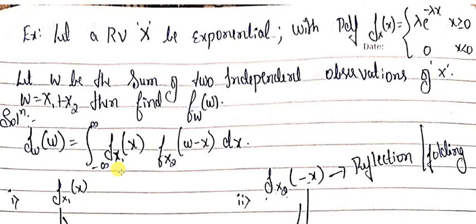Having got to know the information about the analysis of a random variable which is obtained by summing up two independent random variables, we shall have a look over some example or exercise problems on it.